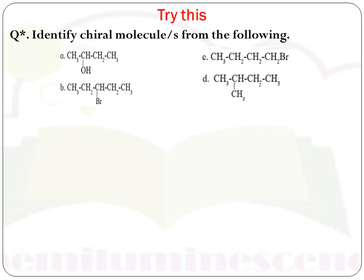Next question: identify chiral molecules from the following. A chiral molecule contains at least one chiral carbon or asymmetric carbon. To identify a chiral molecule, you must find which molecule contains at least one chiral carbon. In the first molecule (A), the first carbon has three hydrogens. The second carbon is bonded to CH3, one hydrogen, one OH group, and one ethyl group (CH2CH3) — all four different groups. Hence it is a chiral carbon, and since a chiral carbon is present, molecule A is a chiral molecule.